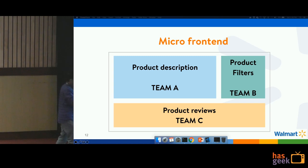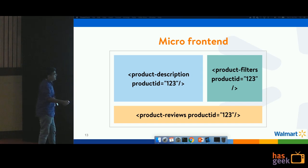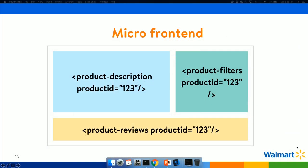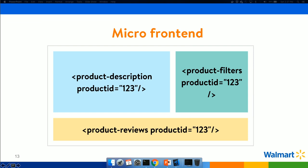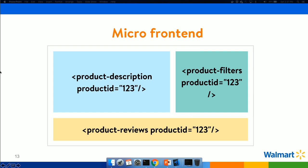In the micro frontend approach, you'd have the product description custom element, product filters custom element, and product reviews custom element — each receiving the product ID to fetch the relevant data. How our approach differs is that we work at a higher level: we consume the applications as node packages. How these applications are built internally — whether they use monorepos, micro frontends, or a monolithic approach — does not concern us. We do not govern how application teams build their apps.